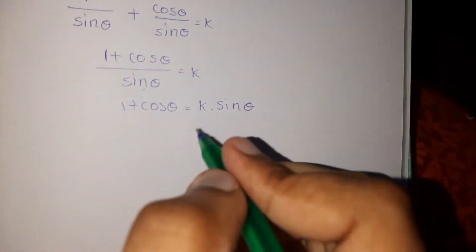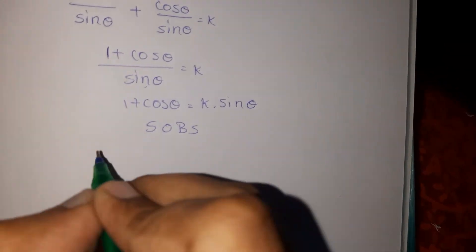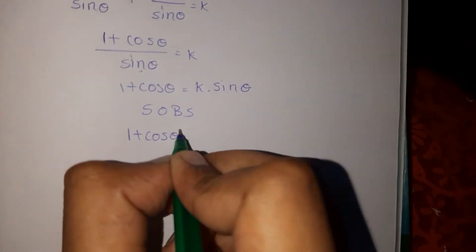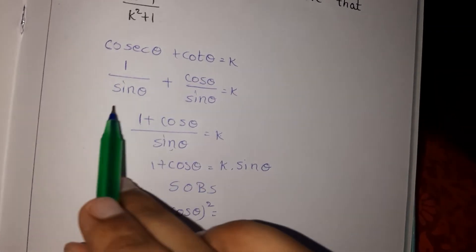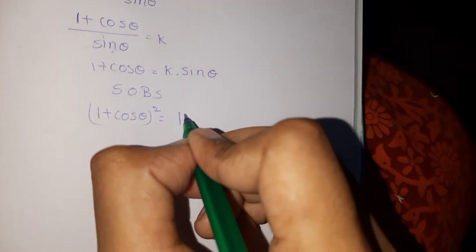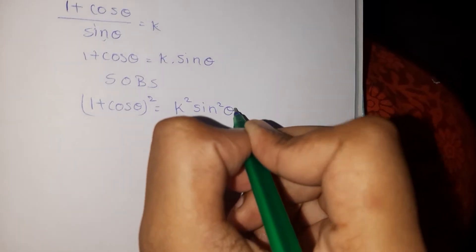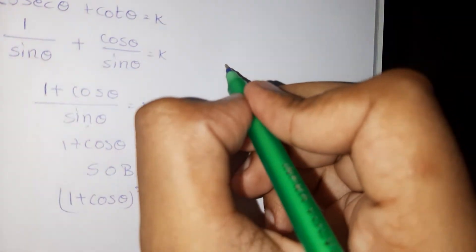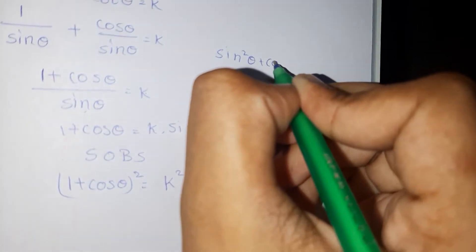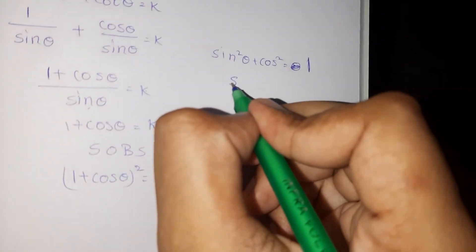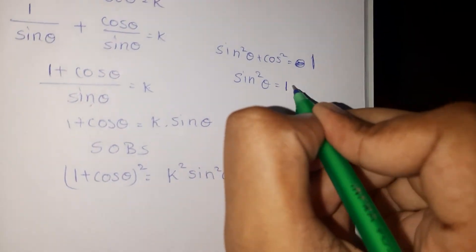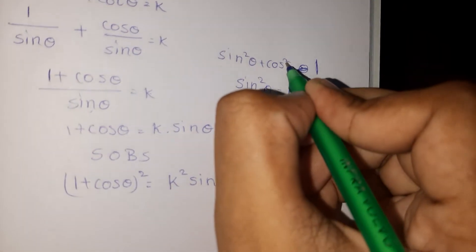Now let us transfer: 1 plus cos theta is equal to k into sin theta. We will square both sides. On squaring: 1 plus cos theta whole square is equal to k squared into sin squared theta. Using the identity sin squared theta plus cos squared theta is equal to 1.